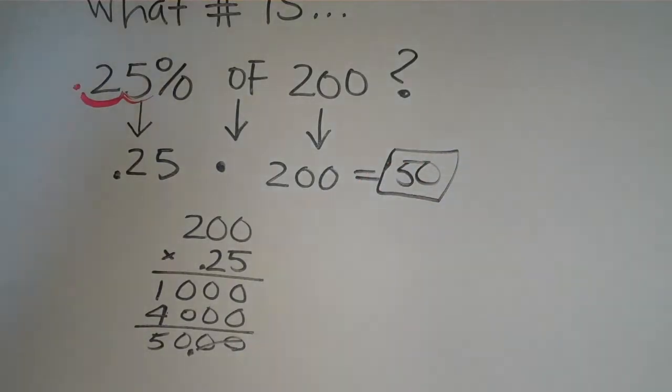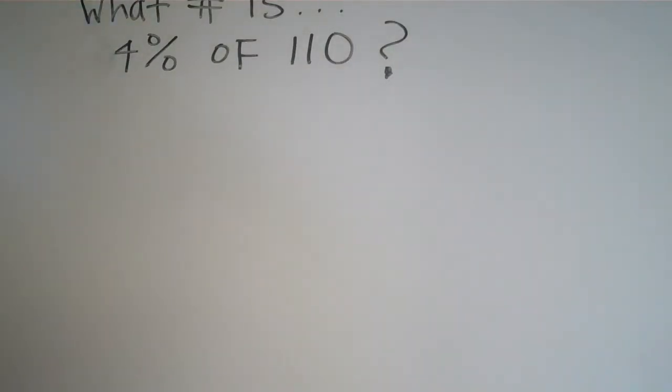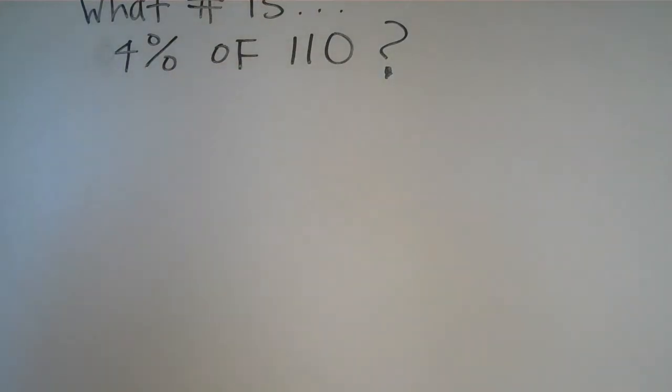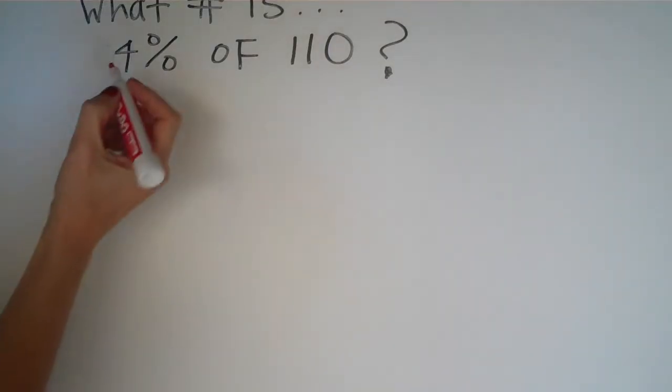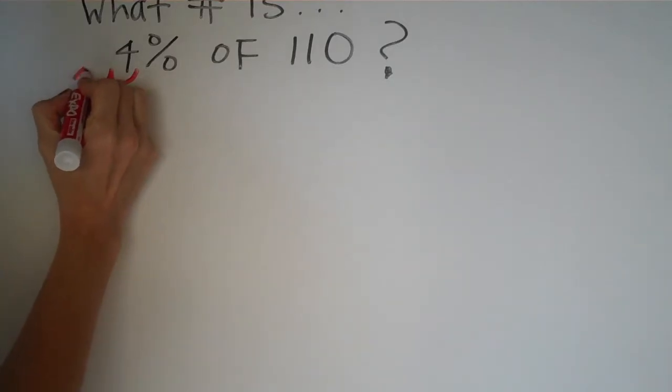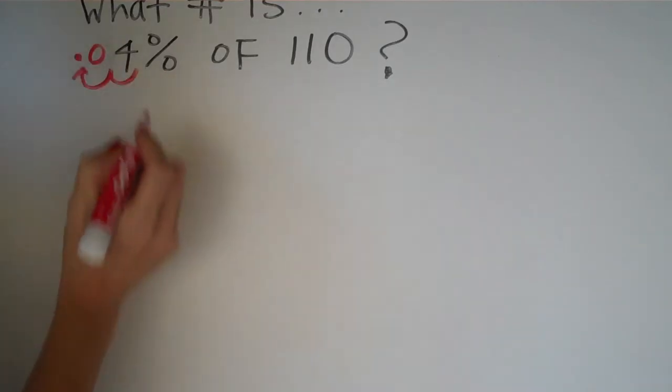Let's try another example. This one says what is 4% of 110. Again, the first thing we have to do is change that percent to a decimal. We're starting right to the right of the four and we have to go two places to the left, adding in that zero. This is a really important step, otherwise you'll get an incorrect answer. So this becomes 0.04, of meaning multiply, times 110.